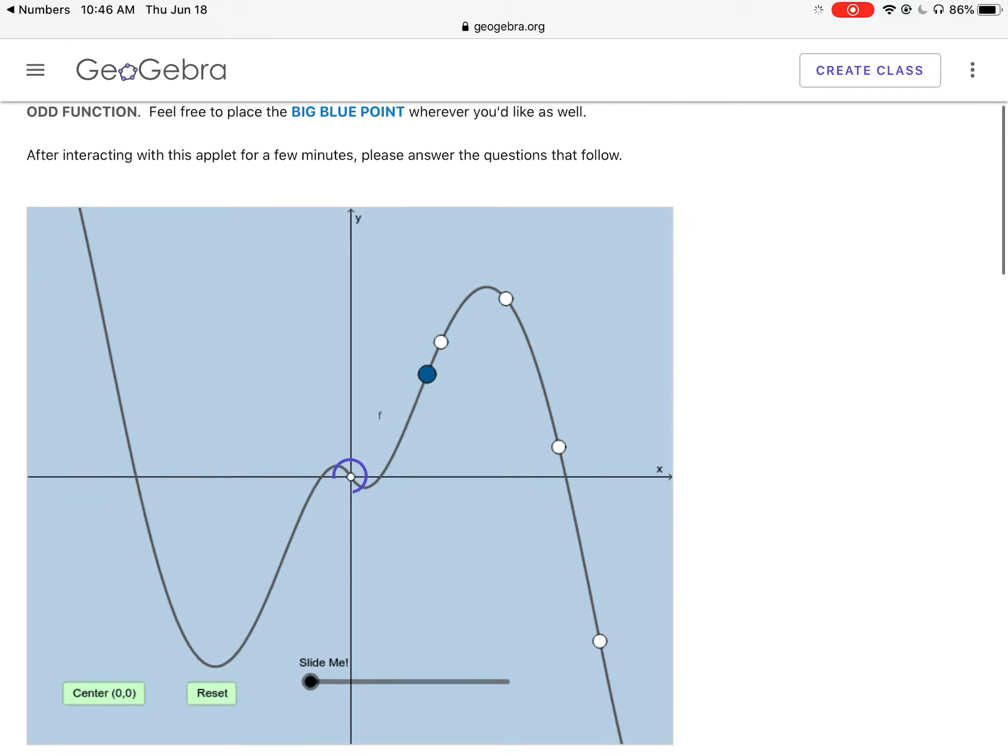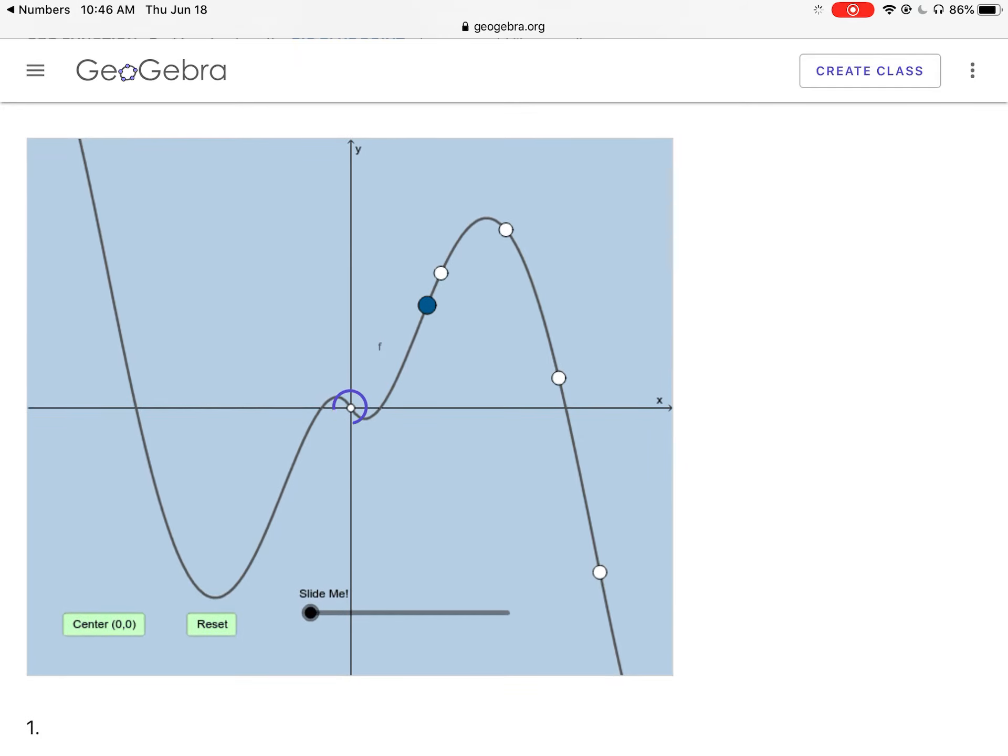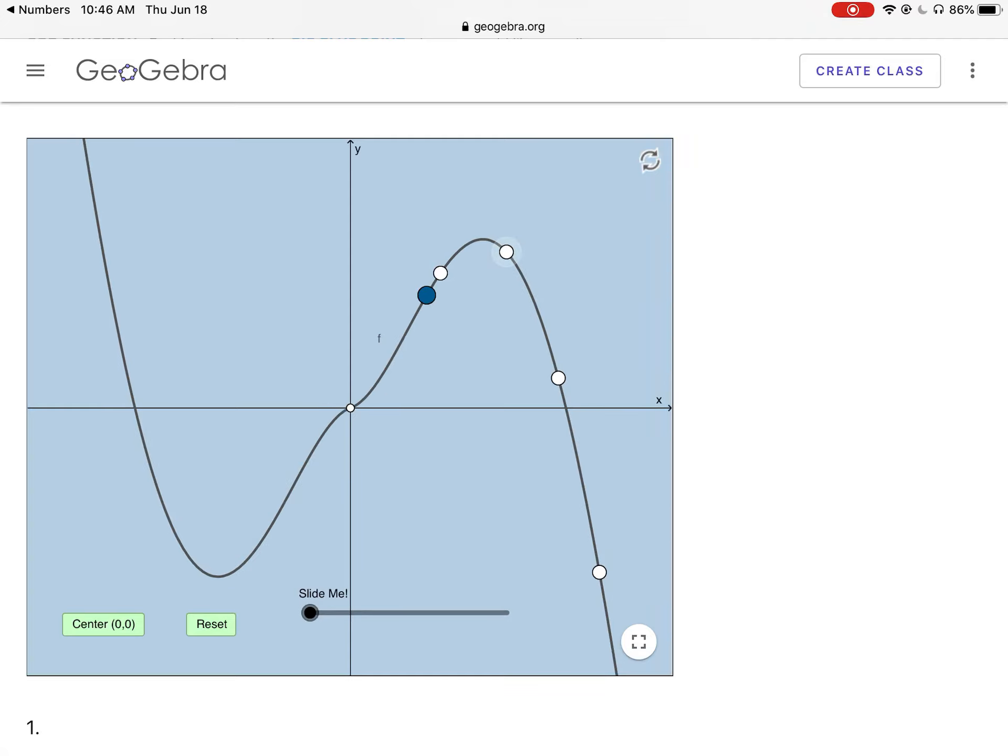Here we have the function f again, but this time f is going to be an odd function. And no matter where I move my points, I always have the same symmetry. This is always an odd function. Notice what type of symmetry I have. There's symmetry in this graph with the origin.